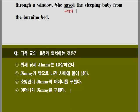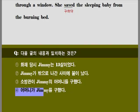다음 글의 내용과 일치하는 것을 고르는 문제입니다. 첫 번째 — 화재 당시 지미는 13살이었다. 아니죠, 13년 전 이야기를 하고 있습니다. 두 번째 — 지미가 밖으로 나간 사이에 불이 났다. 엄마가 바깥으로 나간 사이에 불이 났죠. 세 번째 — 소방관이 지미의 어머니를 구했다. 지미의 어머니가 집 안으로 들어가려고 하는 것을 소방관이 막았던 일은 있습니다. 네 번째 — 어머니가 지미를 구했다. 맨 마지막에 언급되어 있죠. 맞는 내용입니다. 4번이 정답이 되겠습니다.